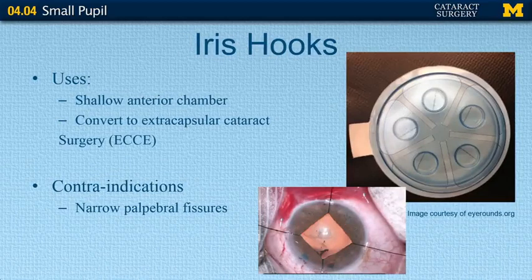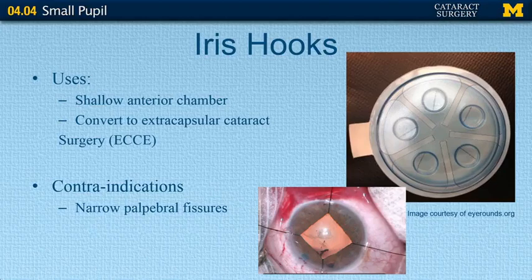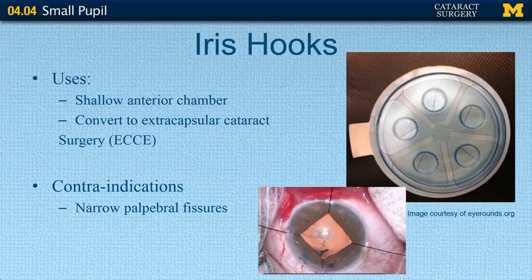Iris hooks can be used to help dilate the pupil. Indications include shallow anterior chamber, or if you know in advance you may need to convert from phaco to extracapsular cataract surgery — iris hooks can be very beneficial. However, don't use them in cases of a narrow palpebral fissure because the hooks can get in the way and placement can be very difficult due to limited space.